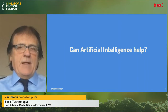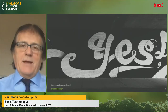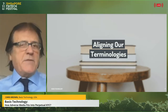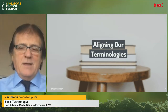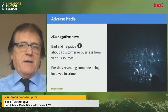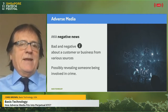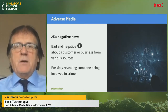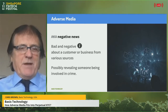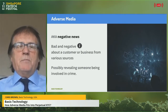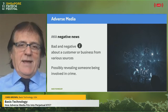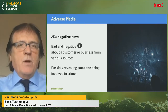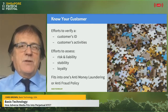Can artificial intelligence help? From a technology perspective, the answer is yes. There is a lot of confusion in the marketplace around terminology. Most banks think of adverse media as negative news, and the two do go together, but adverse media is really about looking at bad and negative information about a customer or business from various sources — possibly revealing involvement in crime, or smarter still, revealing links to someone involved in crime, such as a front person.